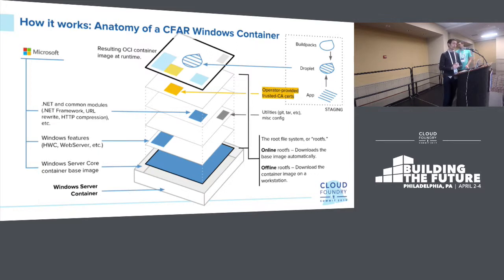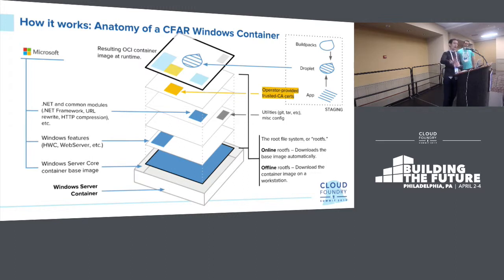The offline root FS enables you to run a command to manually pull that container base image and create the file system release manually, useful in a pipeline or CICD deployment mechanism for air-gapped environments.